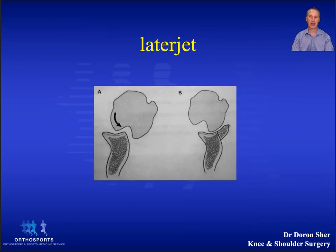In the Latarjet procedure, the coracoid is cut with its muscles still left attached. It's passed through a split in the subscapularis and screwed onto the glenoid.